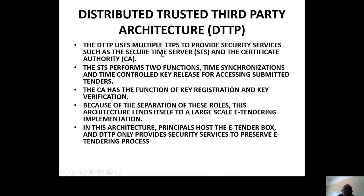In the Distributed TTP (DTTP) architecture, multiple TTPs provide certificates using a Secure Time Server and a Certificate Authority. The STS performs two functions: time synchronization and time-controlled key release for accessing submitted documents. The CA (Certificate Authority) handles key registration and key verification. Because of the separation of these roles, this architecture lends itself to a large-scale e-tendering implementation, though it can cause delays because it is distributed. That's the end of our lecture. Thank you very much.